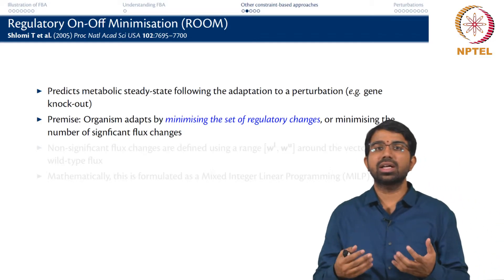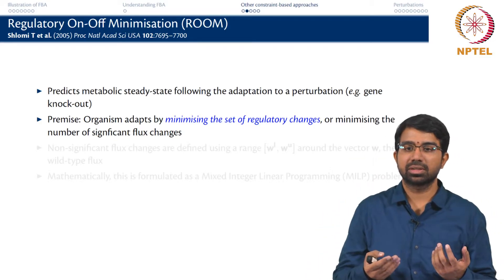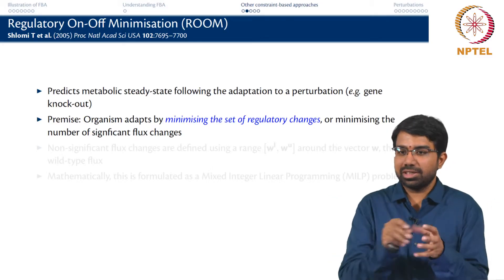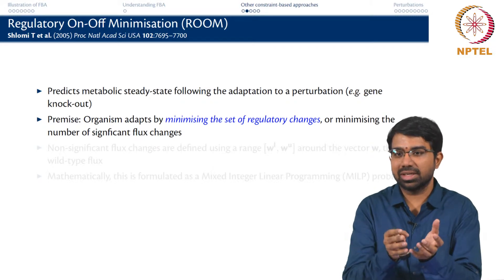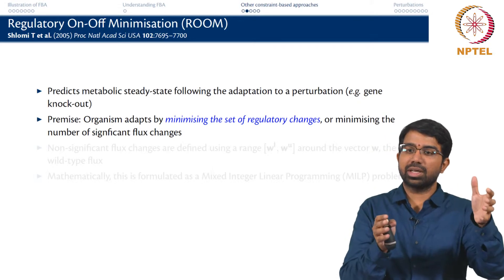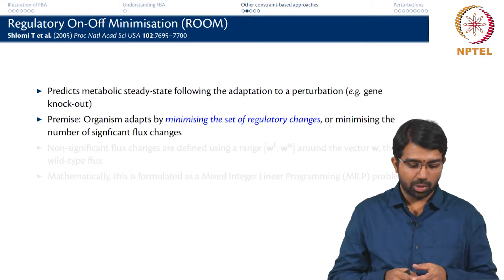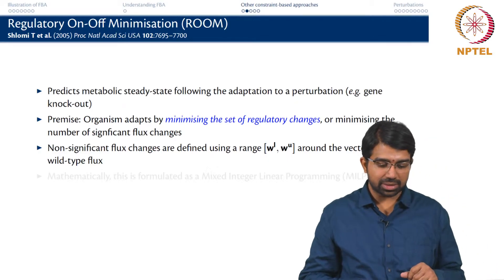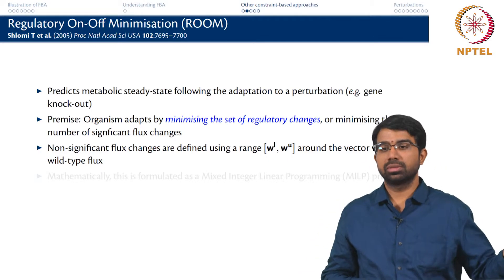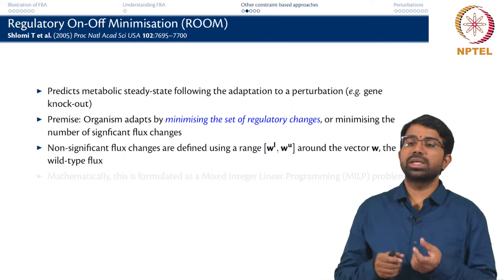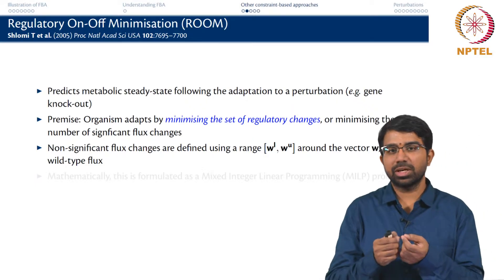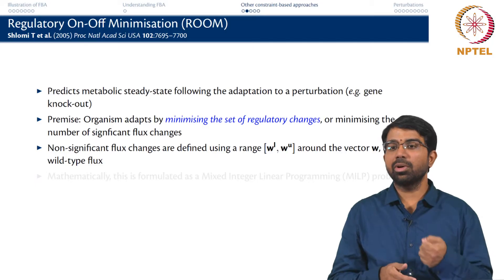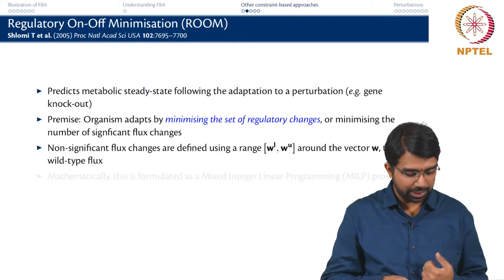The premise here is the organism adapts by minimizing the set of regulatory changes, which makes somewhat more sense. The organism only says my budget for reorganization is about 10 enzymes, so I will try to change 10 fluxes and try to keep as close as possible to the original vector. Non-significant flux changes are defined using a range and ignored. A flux can change by 2-3% and it is not a big deal, but any change more than 5% we want to minimize.